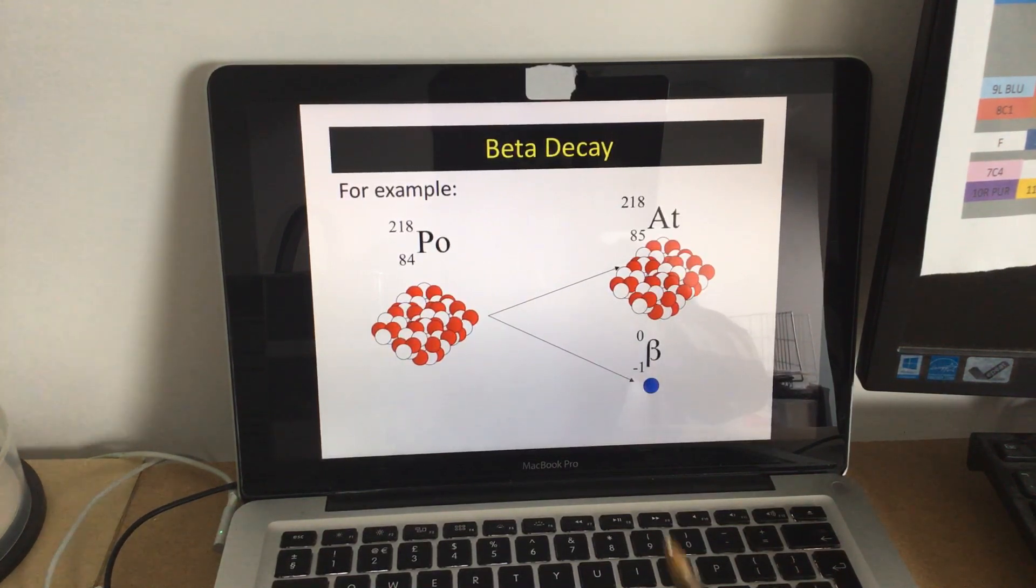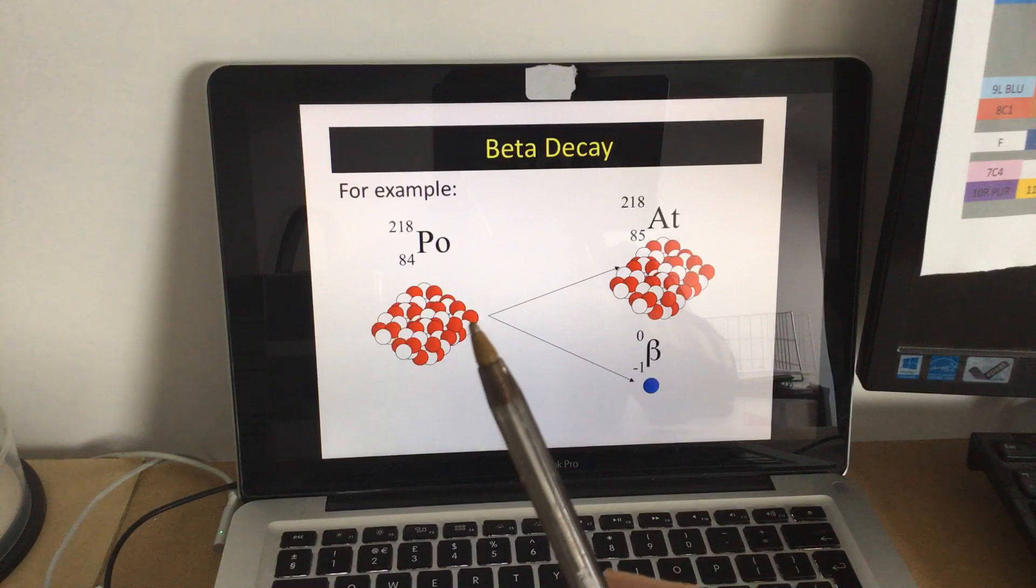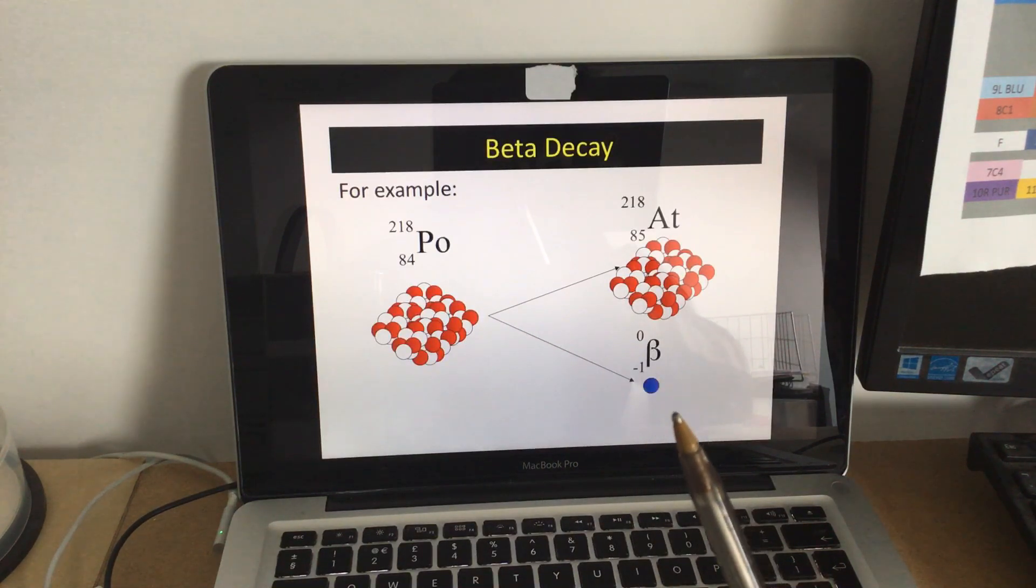It also ejects an electron. Electrons have virtually no mass. So when the neutron turns into a proton, it also turns into an electron, and the electron whizzes out at very high speed, getting close to the speed of light. That's what beta radiation is, beta decay.